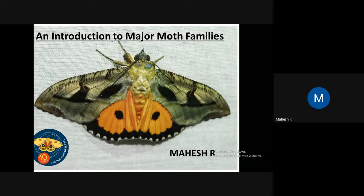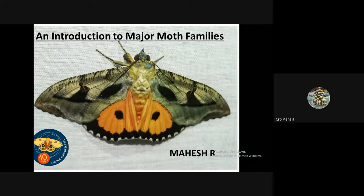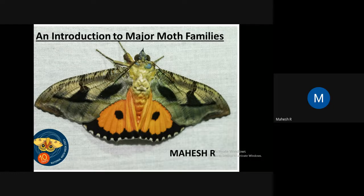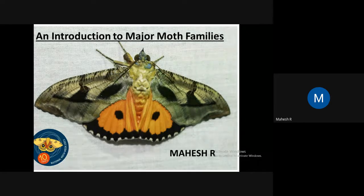Good evening everyone. I am giving an introduction to moth families. There are about 128 families and about 160,000 species distributed in moths. I am here covering only the common 19 moth families that we can see commonly. Comparing to butterflies — in Kerala we have about 320 butterfly species — but when we look at moths of Kerala there will be more than 1,200 species, and that's with a lack of studies.